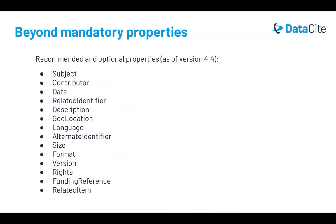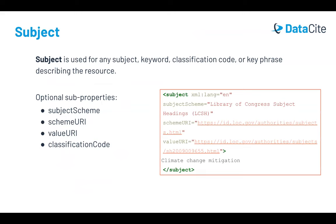Of course, there are many more properties that can be included beyond the mandatory six, and we'll highlight just a couple of the recommended properties that are particularly important. Let's first turn to the subject property, which can be used for any subject, keyword, classification code, or key phrase describing the resource. Subjects are critical for discovery and help to contextualize resources. There are a few optional subproperties that are helpful to include when using a controlled vocabulary or classification scheme. For example, with a Library of Congress subject heading, that would be the classification scheme, and then you would include the link to the authority record in the value URI field.